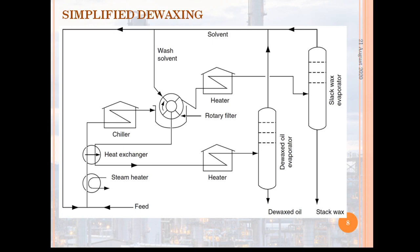The cold slurry is fed to the rotary filter for removal of the crystalline wax. The filter cake is washed with cold solvent, and an inert gas blanket with slight positive pressure is maintained on the filters to blow back the wax cake from the filter cloth before it reaches the filter medium scraper. The solvent is recovered from the filtrate and the wax by heating, two-stage flashing, followed by steam stripping.